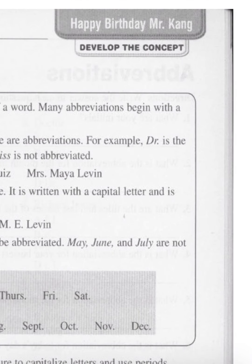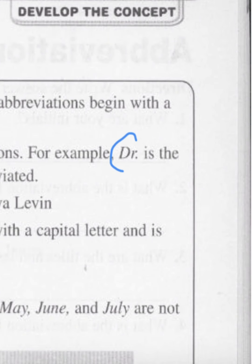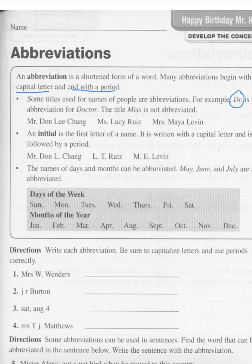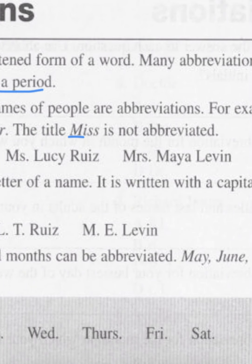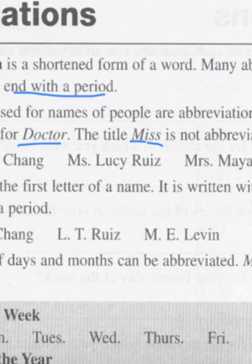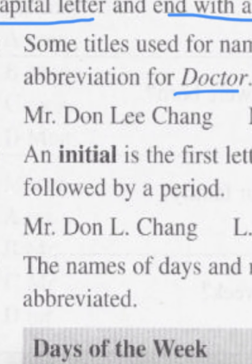For example, capital DR period is the abbreviation for doctor. It's also the abbreviation, by the way, for drive. So you might live on a street where the last word is drive, and sometimes you'll see that abbreviated as capital DR period. So here we have Mr. Don Lee Chang — Mr., capital MR period.